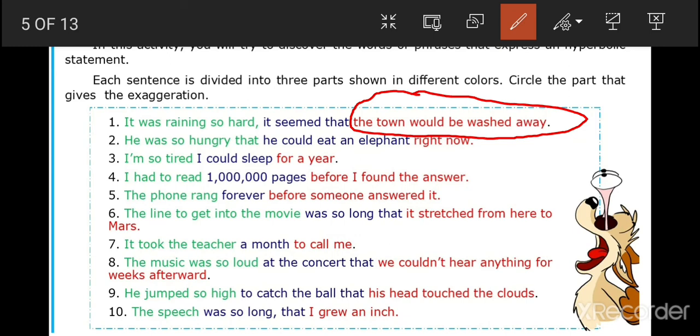Number two: He was so hungry that he could eat an elephant right now. Which do you think is showing an exaggeration? Is it the green, is it the blue, or the red? Right, it's the blue one. 'He could eat an elephant' because that is impossible. That is an exaggeration, that is hyperbolic, that is overacting. So that is what you need to do from number three to ten. All you have to do is to encircle the phrase or the statement that would show an exaggeration, an overacting, or a hyperbolic expression.